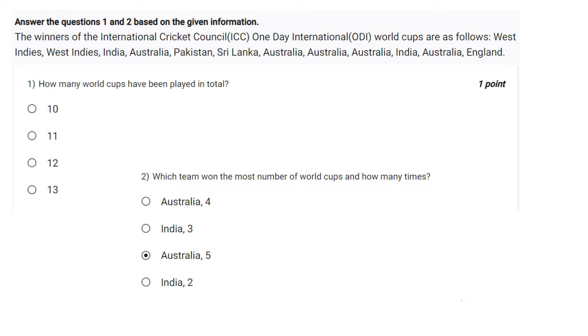So how many World Cups means we should count the winners team. West Indies 1, 2, 3, 4, 5, 6, 7, 8, 9, 10, 11, 12. So correct answer is 12.